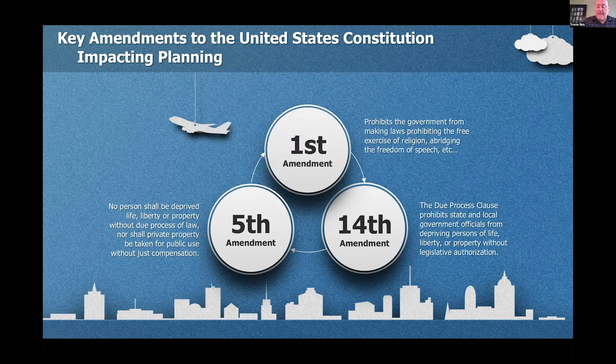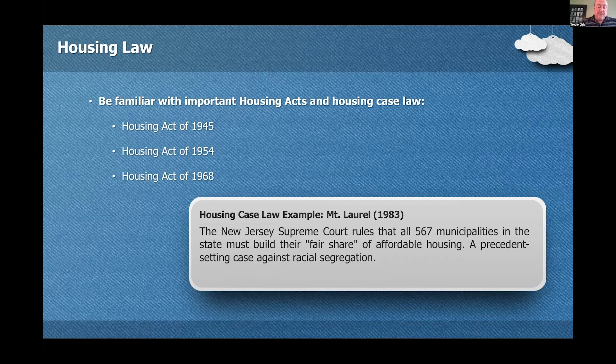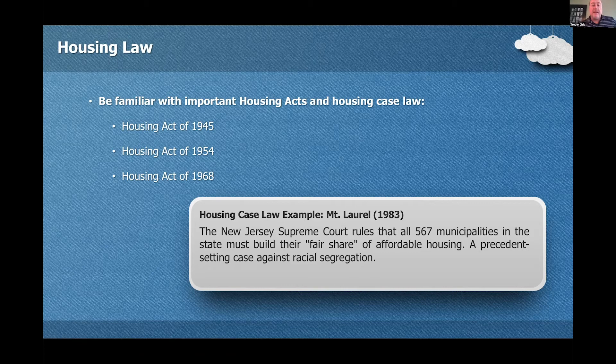The 14th Amendment contains the Due Process Clause, which prohibits state and local government officials from depriving persons of life, liberty, or property without legislative authorization. Be familiar with the many key housing acts and the unique characteristics of each one. In 1934, the Housing Act was part of the New Deal, passed during the Great Depression to make housing and home mortgages more affordable. The Housing Act of 1954 provided funding for 140,000 units of public housing. And lastly, the Housing Act of 1968, often referred to as the Fair Housing Act, made it illegal to refuse to sell or rent a dwelling to any person because of race, color, disability, religion, sex, familial status, or national origin.